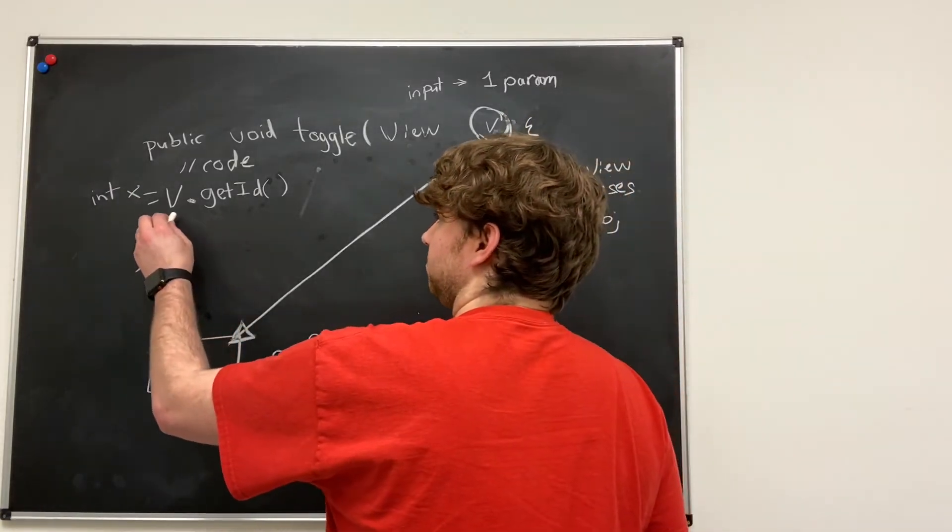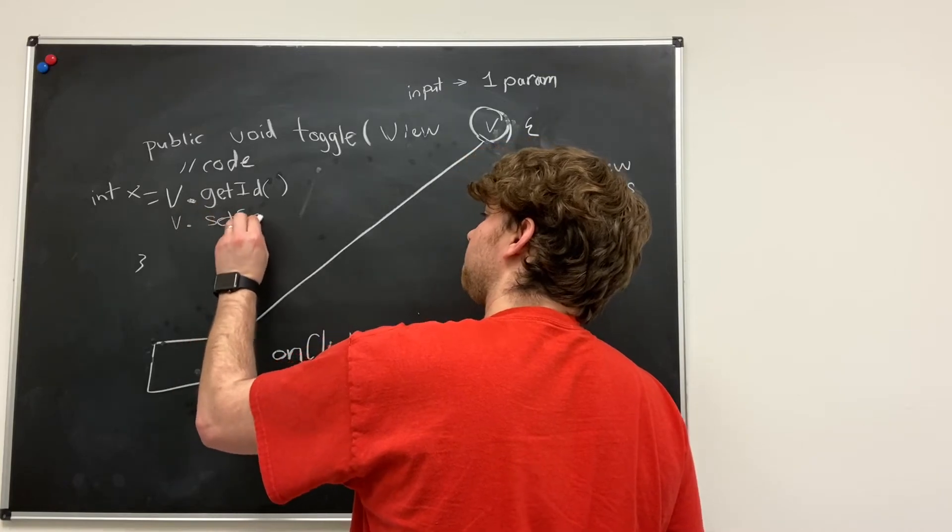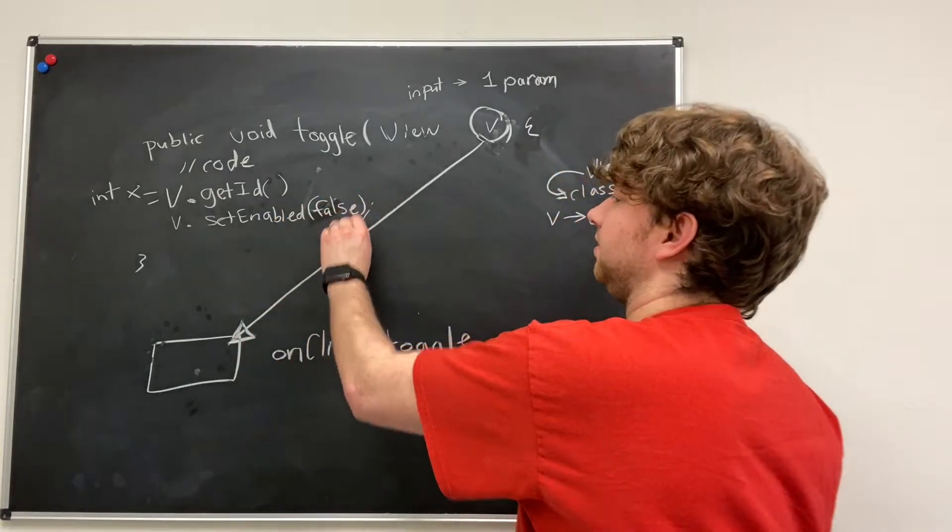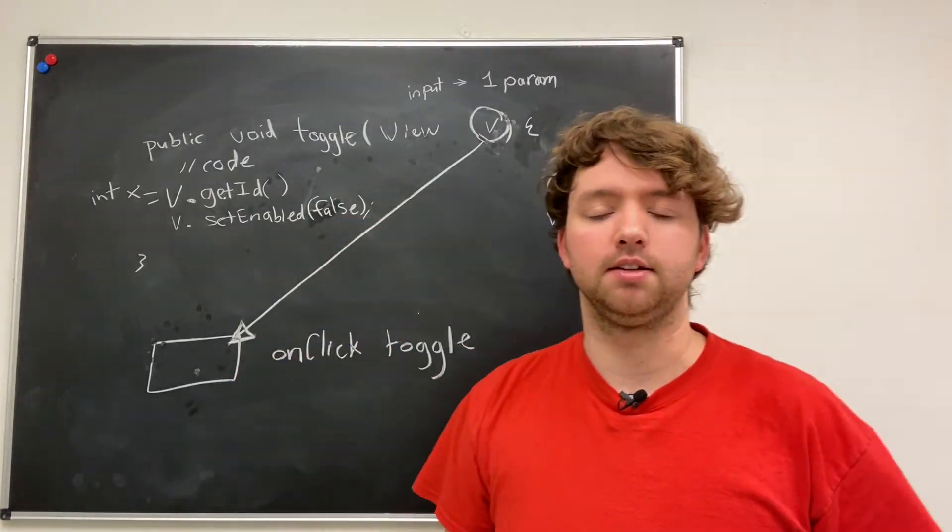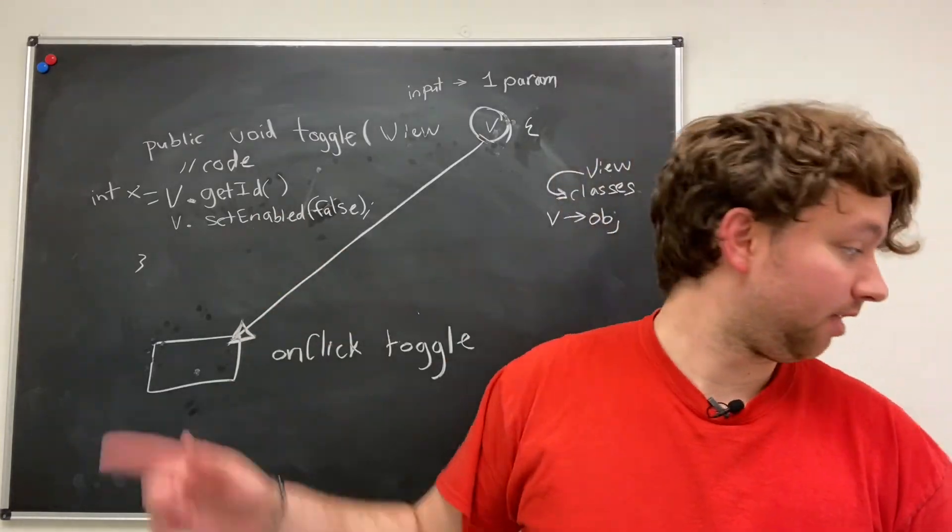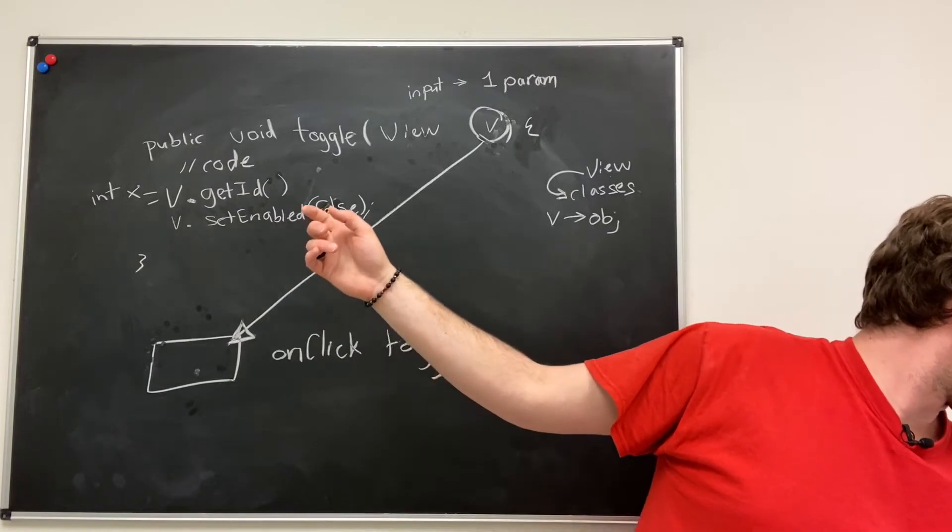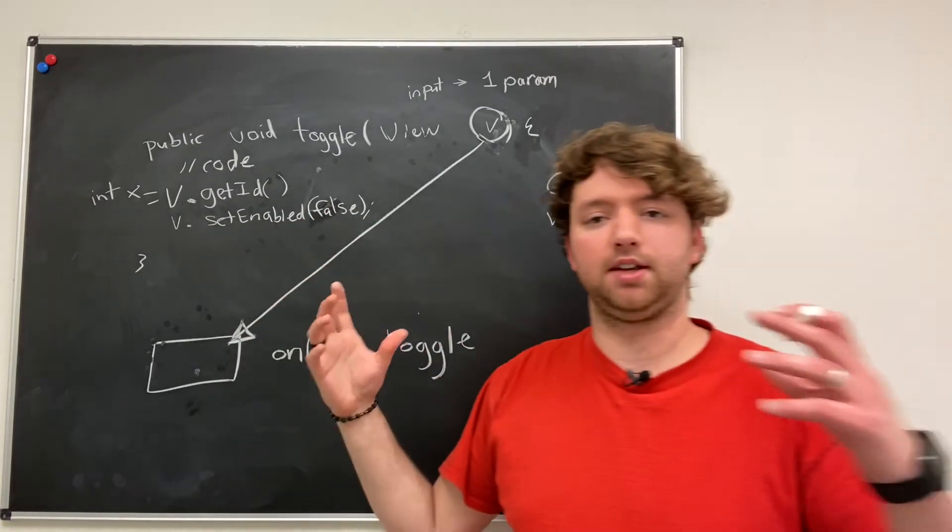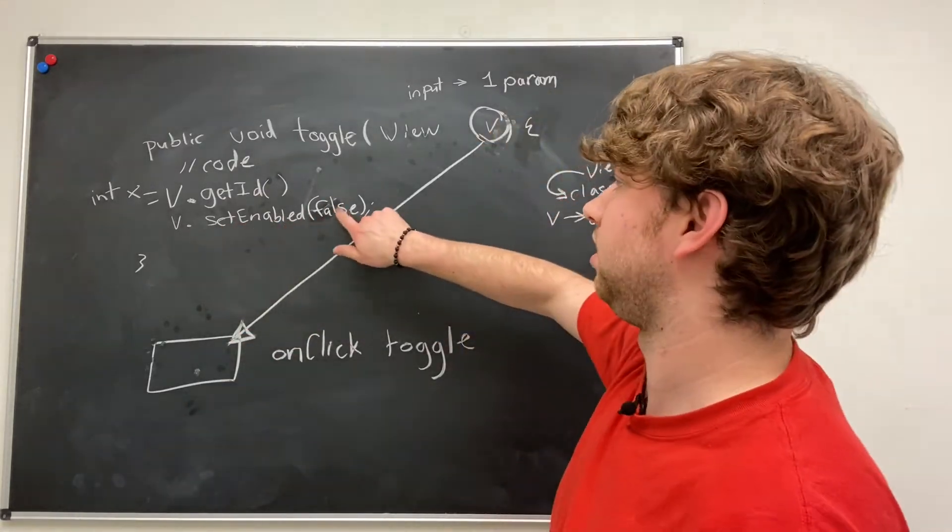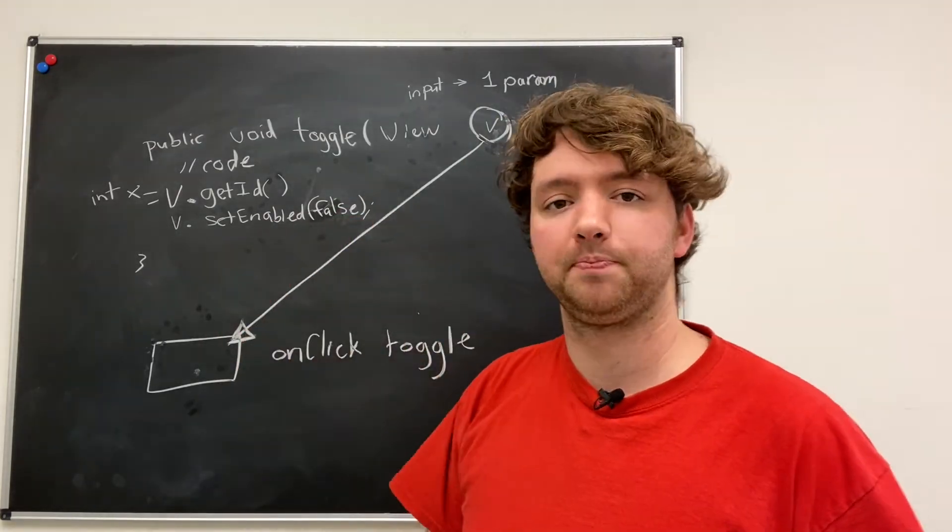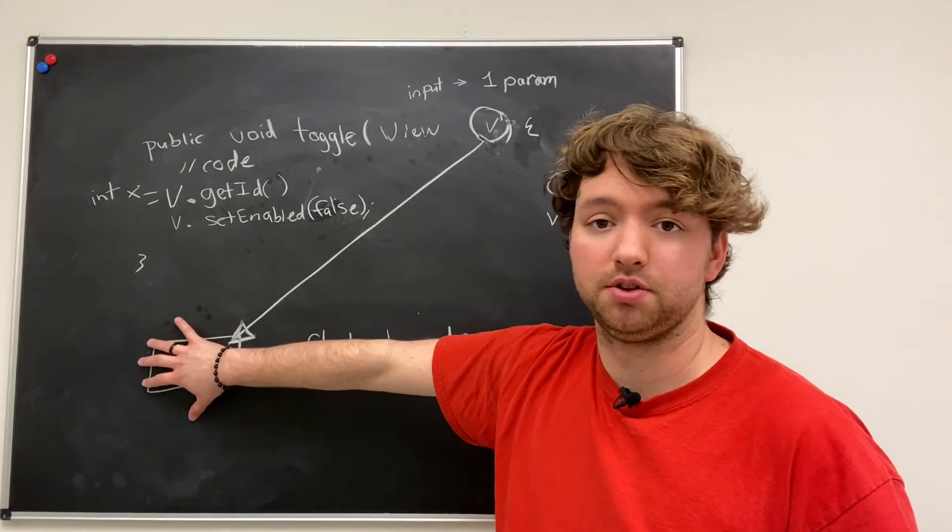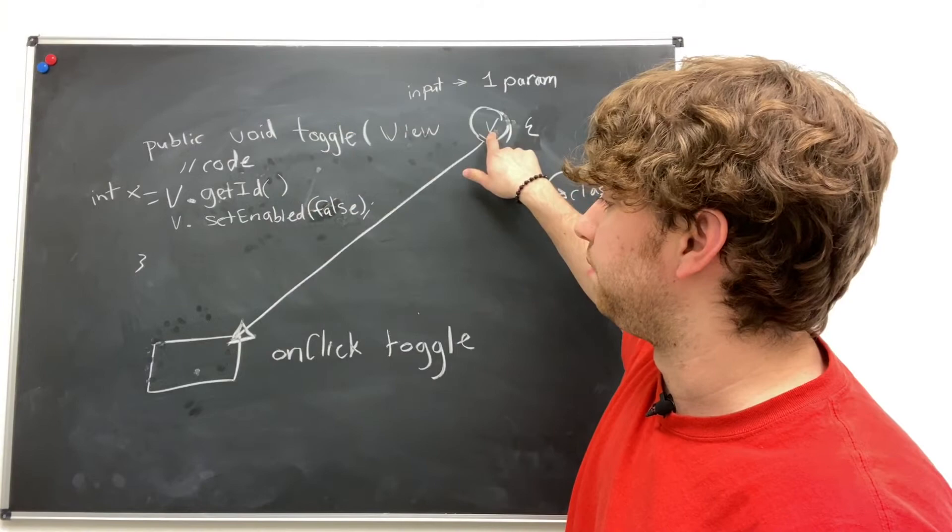We could also do things like modify the button. So we could say V dot set enabled. And we could set this to false. We could pass in the value false. Boom. Now the button is like grayed out and you can't click it. So if you want it to be like a one time button like activate and then it's grayed out and you can't click it, that's how you do it. So set enabled, it takes one parameter or I guess in this situation is an argument. The thing you pass into a parameter when you're invoking a method, this is known as an argument. So it takes one argument and it's a Boolean true or false. So that's how we can disable that button, make it no longer clickable.